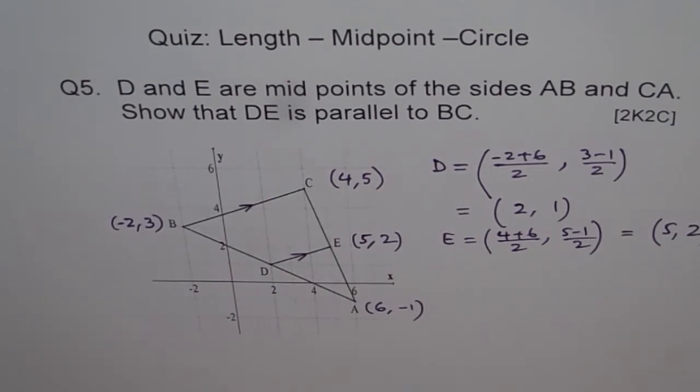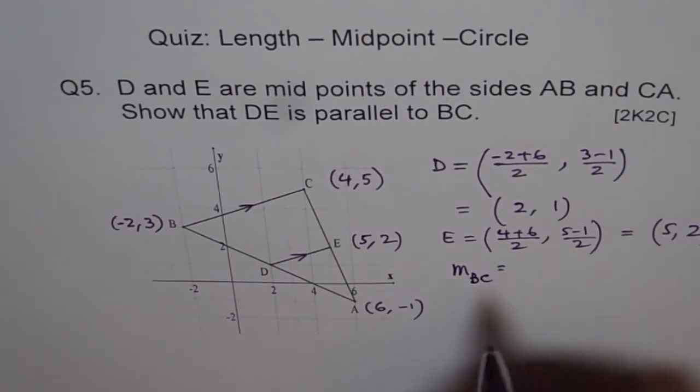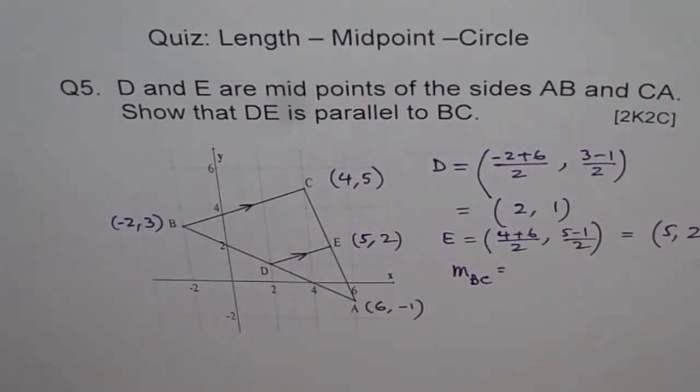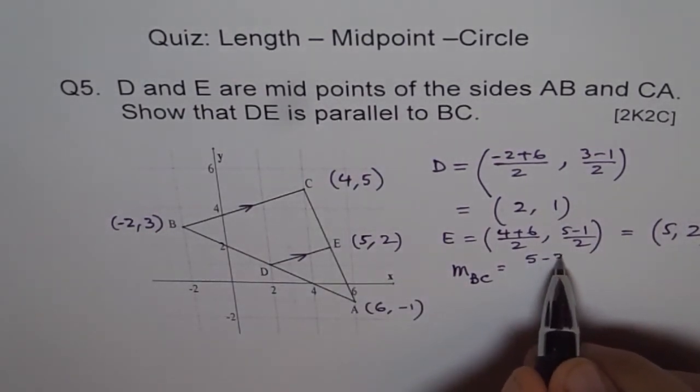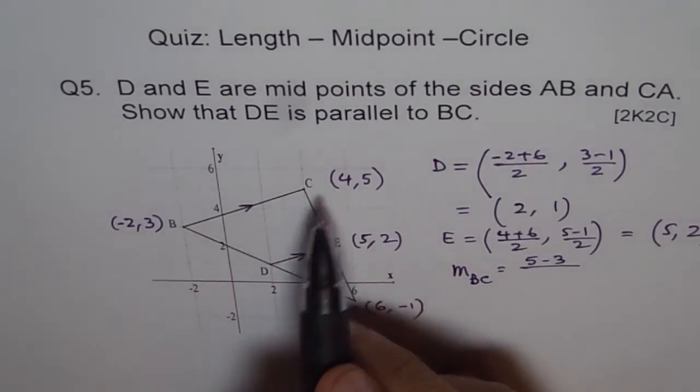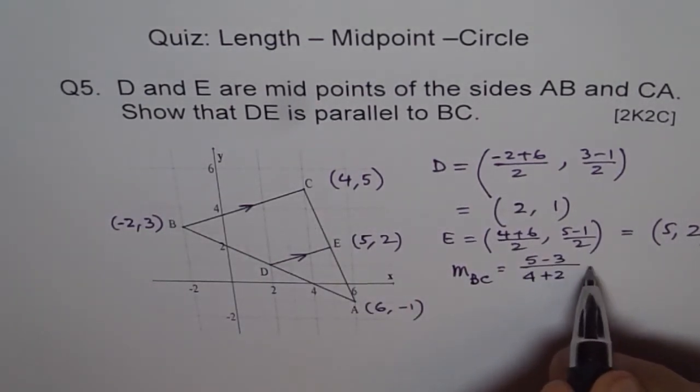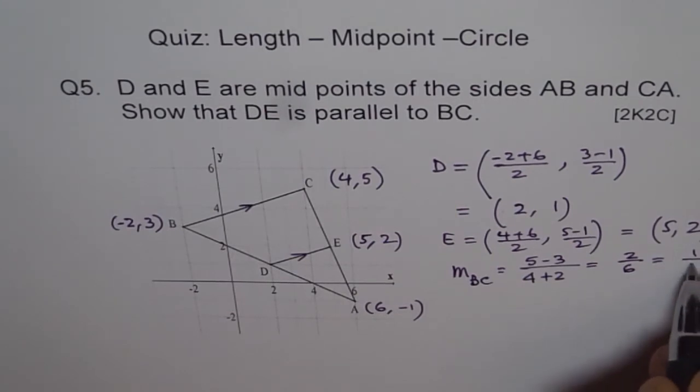Now how will you show that these lines are parallel? Slope, right? So what is slope of BC? Slope of BC is (Y2 - Y1) divided by (X2 - X1), correct? Y2 is 5 minus 3. We say 5 minus 3 divided by 4 minus (-2) which becomes 4 + 2. 5 minus 3 is 2. 2 over 6 which could be written as 1 over 3.